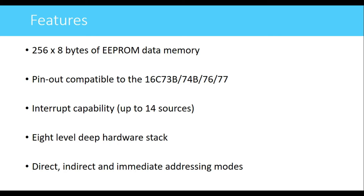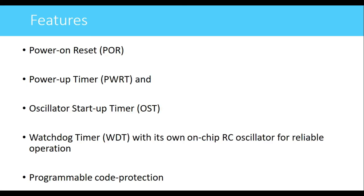There are 3 addressing modes: direct addressing mode, indirect addressing mode, and immediate addressing mode. An addressing mode is the way by which we can access the operands for an instruction. Additionally, there is a power-on reset facility used to reset the CPU — whenever power is turned on, the CPU resets and then starts working.